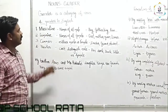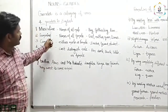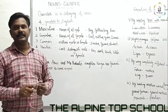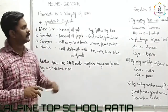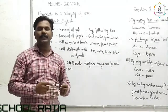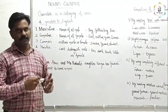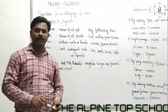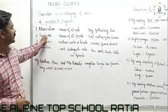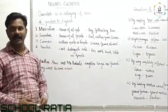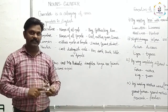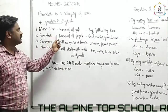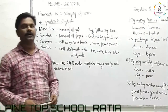The first one is masculine gender. Masculine gender denotes all the names of male persons or animals. So names of all male persons or animals we can call masculine gender.